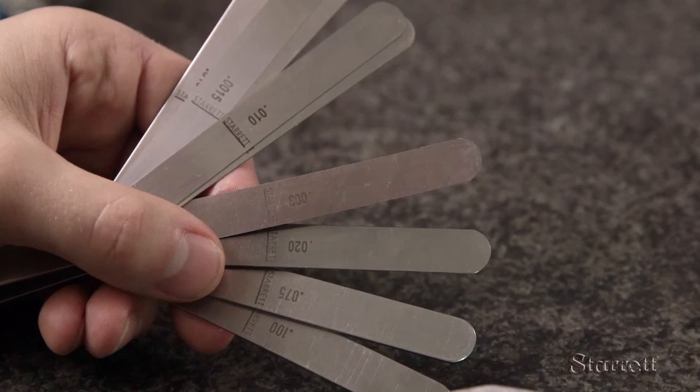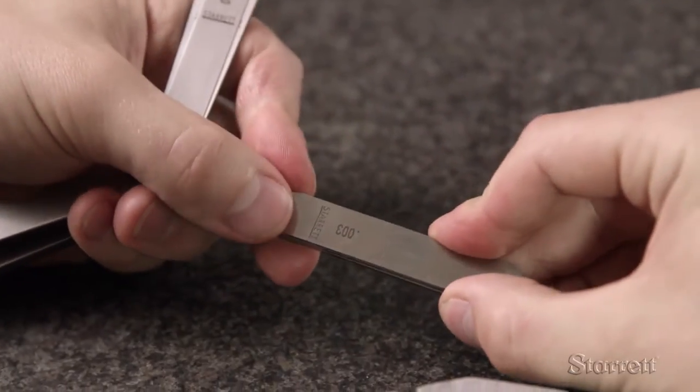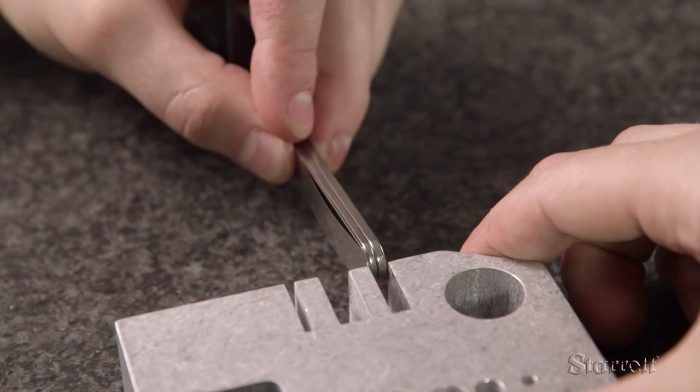You can use the gauge to check whether a slot or gap is within tolerance. First, set the gauge to the minimum. If it doesn't fit, you are below tolerance.